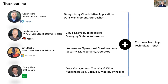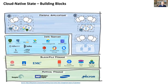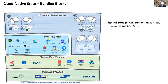Let's take a step back and think about cloud native and state — where do these stateful pieces reside? This is a simplified view of where state gets stored. Starting from the bottom up, you actually have physical storage. Somehow your data needs to reside somewhere — on-premises or in the public cloud. There are a variety of options, whether it's spinning media or SSD — that makes up the bottom layer of this stack.